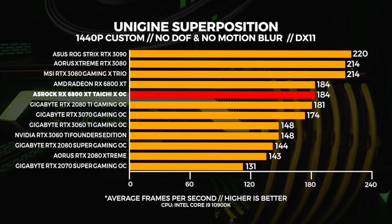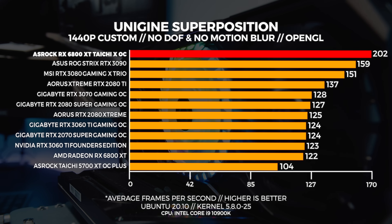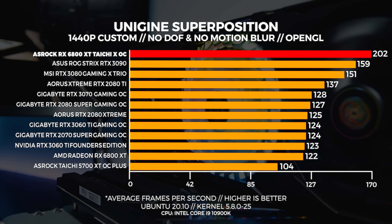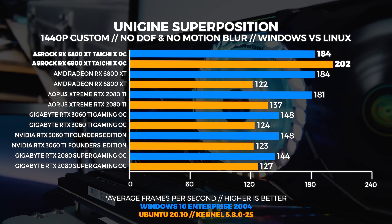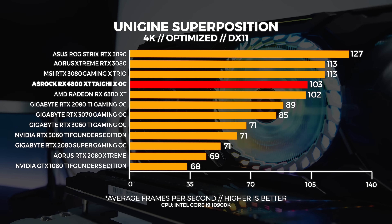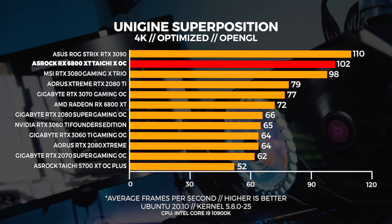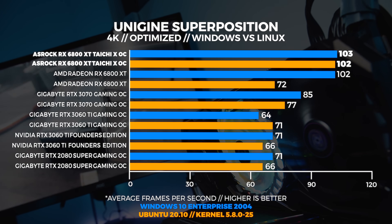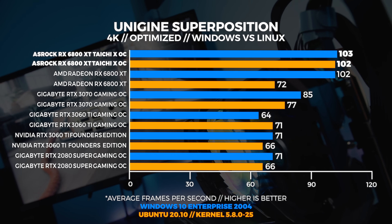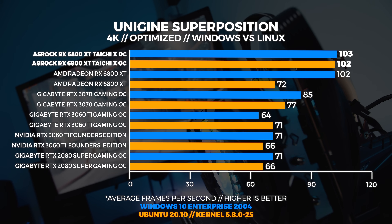At 1440p in Windows, the Taichi X performs the same as the reference card. But in Linux at 1440p with the new ACO compiler, the ASRock card destroys everything else by an absolute huge margin. This tells me we're going to need to retest all of the AMD GPUs again with this new ACO compiler, but we'll do that at a later date. Comparing Windows to Linux, for once with Superposition, Linux came out on top. At 4K in Windows, the Taichi X comes in just behind the 3080. In Linux at 4K, the Taichi X is beating out the 3080, but only by a few frames. Comparing Windows to Linux at 4K, they're pretty close to parity. Shout outs to all the teams that put together the new compiler — you've done good.